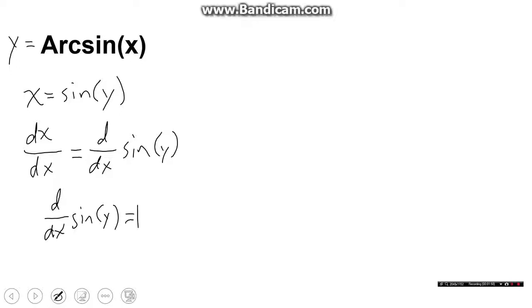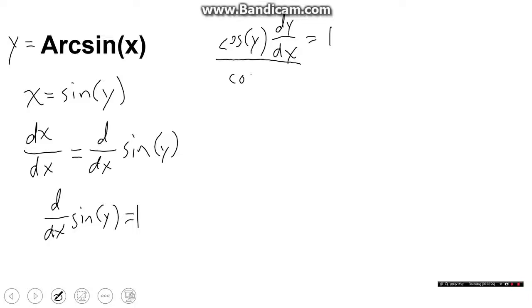I switched the sides of the equation so that it's easier to see. Now we'll actually derive sine of y. We know that the derivative of sine is cosine, so that gives us cosine of y. Remember, this is very important: since we're taking the derivative of y in terms of x, we're going to have to use the chain rule and say cosine of y times dy over dx equals 1. Then we'll divide both sides by cosine y to isolate dy over dx, which is what we're solving for, and we're left with dy over dx equals 1 over the cosine of y.